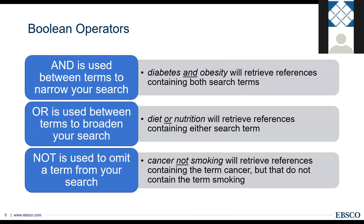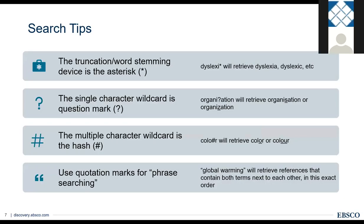When searching, some things that can help with your search construction. First, we can make use of the Boolean operators: AND, OR, and NOT — to broaden, narrow, or omit a term. Using AND will narrow the search; for example, 'diabetes AND obesity' will retrieve references that have both terms. Using OR will broaden: 'diet OR nutrition' will retrieve references with either term. Using NOT will omit a term. You can use these in uppercase or lowercase in basic or advanced searching.